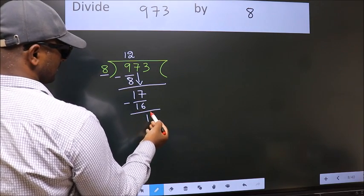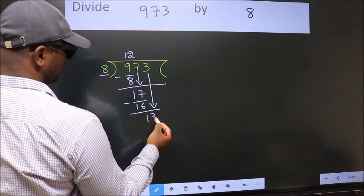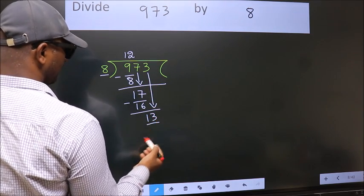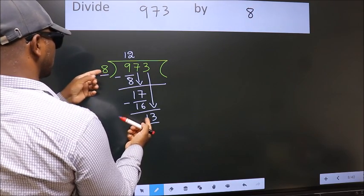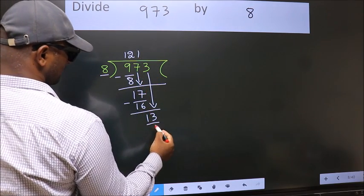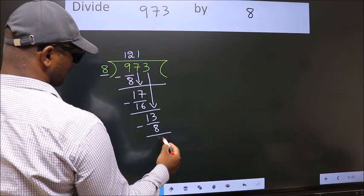After this, bring down the beside number. So, 3 down. So, 13. A number close to 13 in the 8 table is 8 once 8. Now we subtract. We get 5.